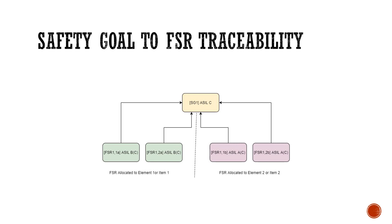FSR 1-1B and FSR 1-2B are for Element 2. The ASL level for each element is SL-B, extracted from the SL-C item, and C is shown in brackets to indicate the original ASL from the SL-C safety goal. Similarly, FSR 1-1B is SL-A extracted from the SL-C item and safety goal, and FSR 1-2B is also extracted from the SL-C safety goal, with C shown in brackets.